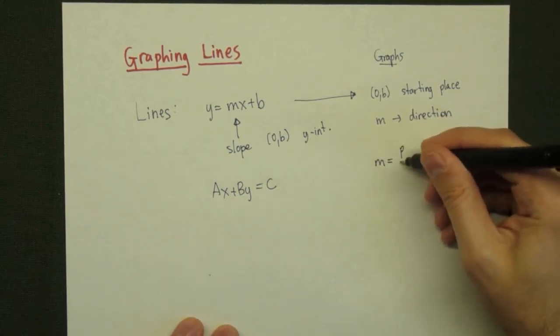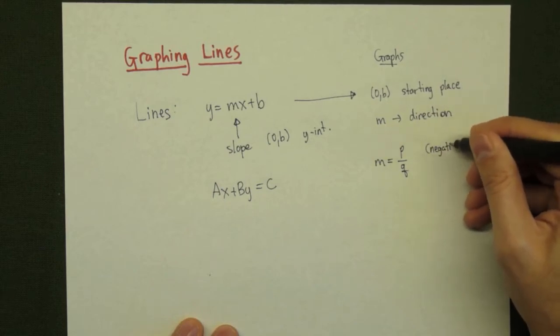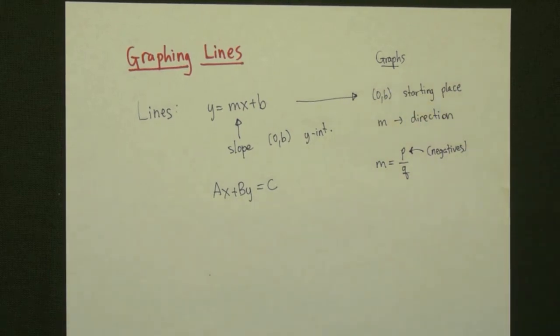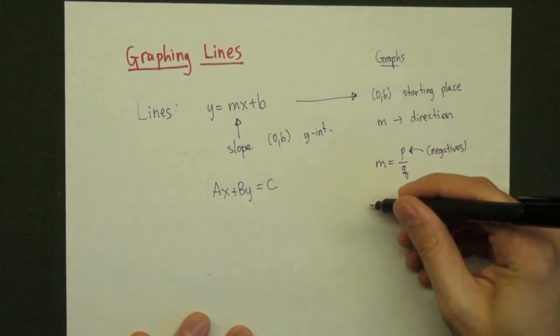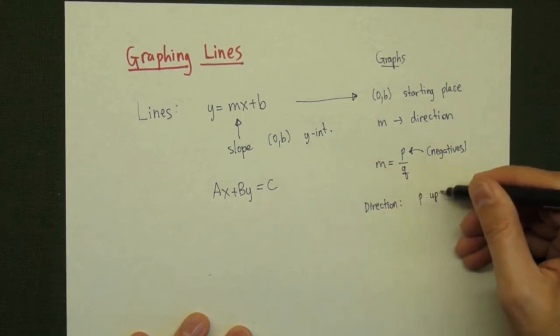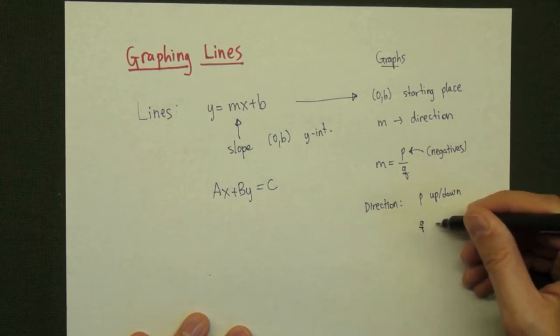If we write the slope as a fraction, p over q, and we keep any negative sign that goes with the fraction in the numerator, then the direction that the line moves will be given by the p and the q. In particular, it will move p up or down for every q that it moves over to the right.